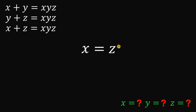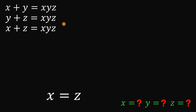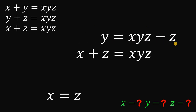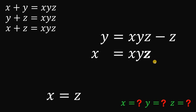Now, for our second clue, let's use the second and third given equations. On the second equation, if we subtract z on both sides, we get y equals xyz minus z. On the third equation, if we subtract z on both sides, we get x equals xyz minus z also. So again, we can say that y must be equal to x.